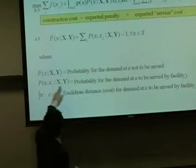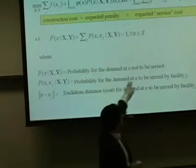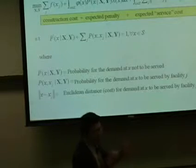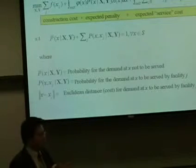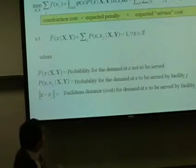And the P bar we define as a probability for the demand at X not to be served. So the probability that this customer would not have a choice of going any, you know, everything failed for him.